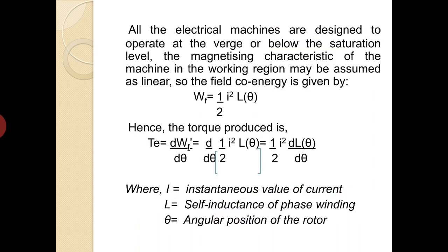As all electric machines are designed to work at the verge or just below the saturation level, the magnetizing characteristics of the machine in the working region may be assumed as linear. So, the field co-energy may be given as W' = (1/2) * I² * L(θ), where inductance L is a function of angular position of the rotor angle θ. The torque produced is given by the change in co-energy with respect to the rotor angular position θ, where I is the instantaneous value of current, L is the self-inductance of the phase winding, and θ is the angular position of the rotor.